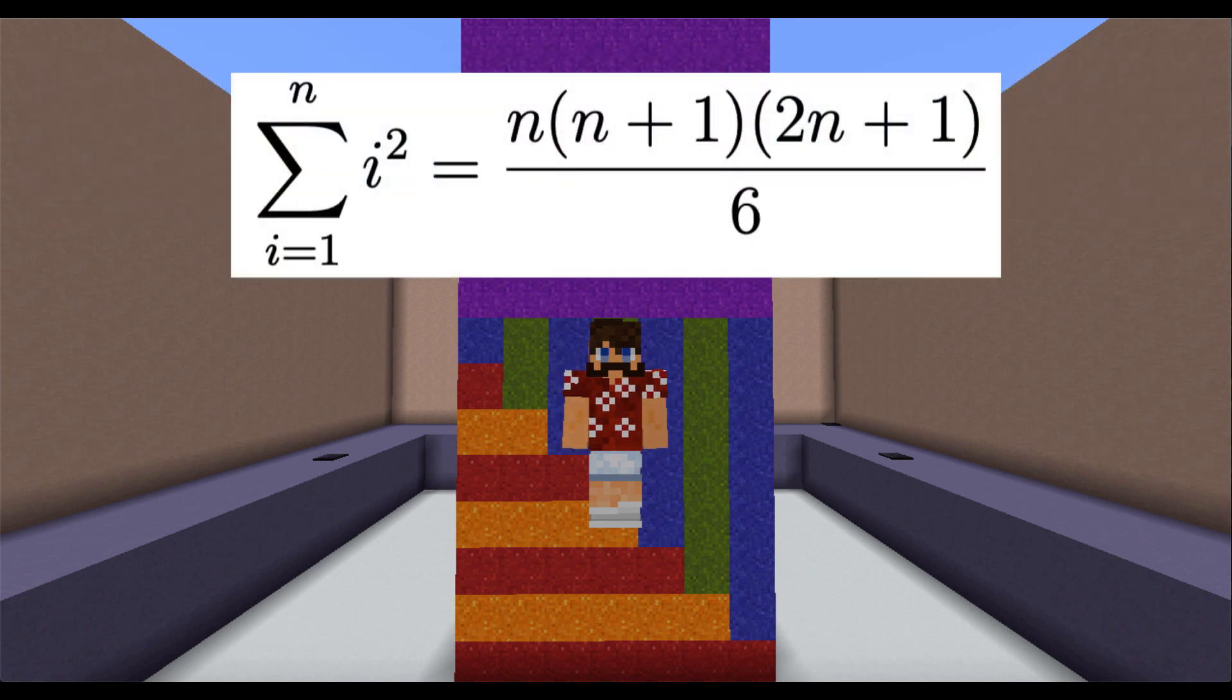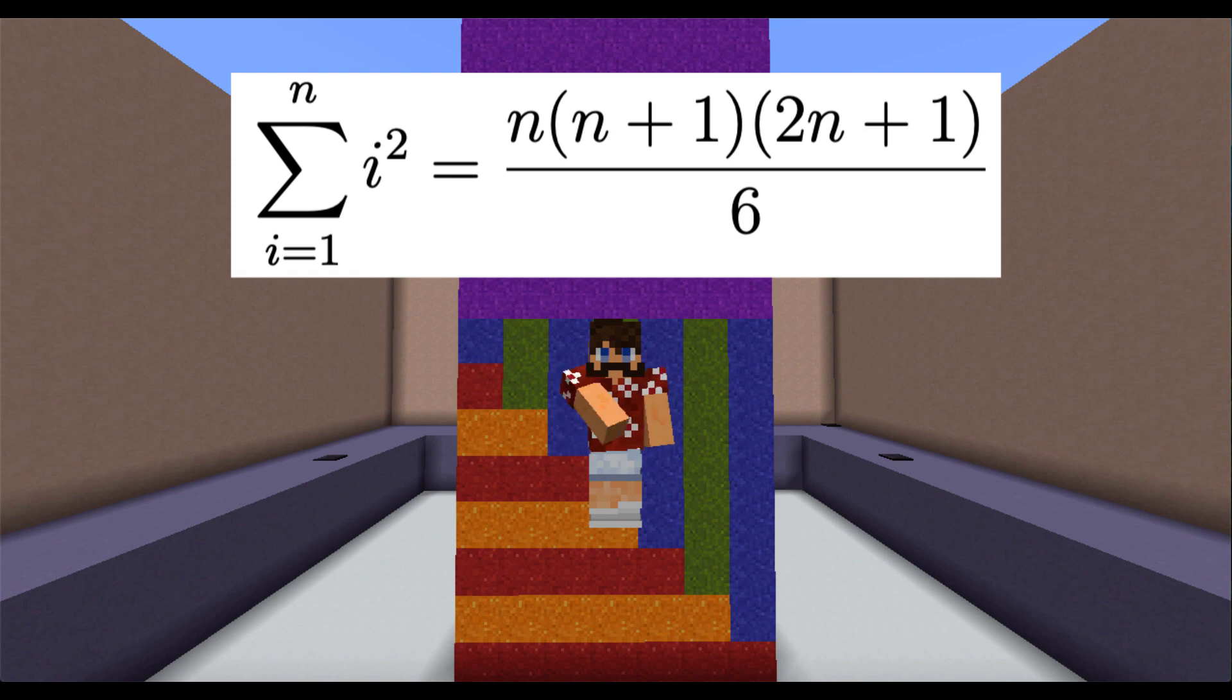Therefore, the sum of the first n squares is equal to n times n plus 1 times 2n plus 1 all over 6, just as you were told in your calculus class.